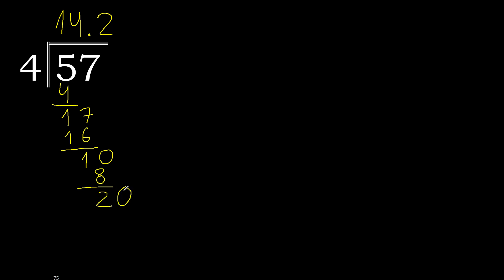Always complete with 0. The decimal point is here. 20 — 4 multiplied by 5 is 20, is not greater. Subtract 0.